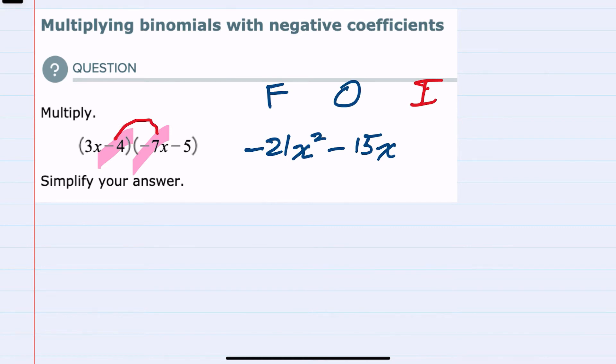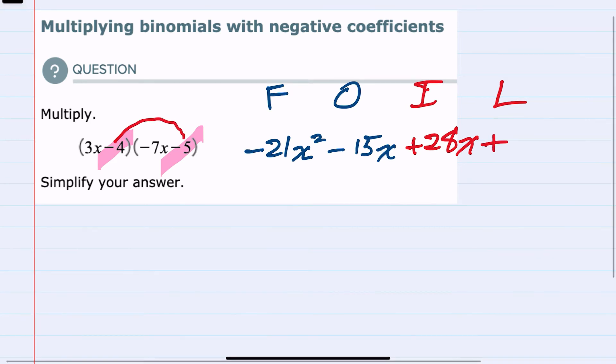Multiplying gives us minus 4 times minus 7 is positive 28x, and then multiplying the last term in each expression, we have minus 4 times minus 5, which is positive 20. However, we do need to simplify our answer, and our middle terms here are like terms, so we can combine those.